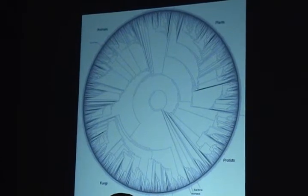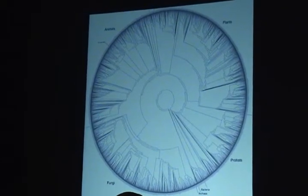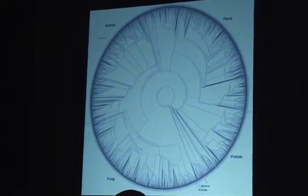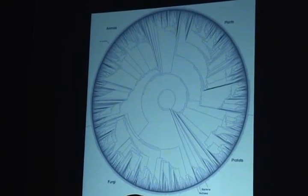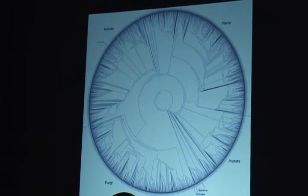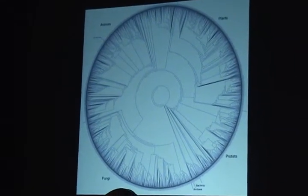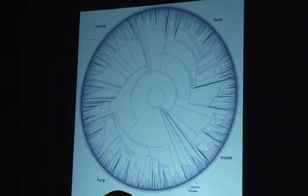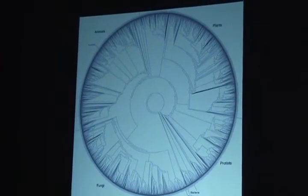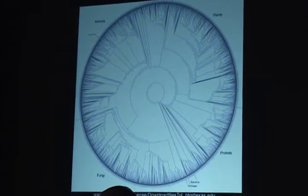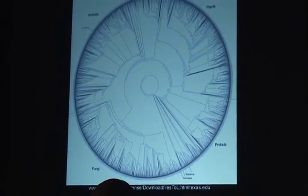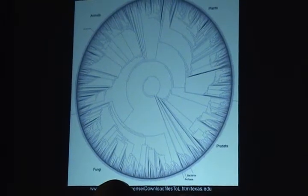We're not a closed system. We're getting energy from the sun — we have a source of energy, you can grow complexity. Today is the outer perimeter of this circle. Most of us, when we grew up, we had the animal kingdom and the plant kingdom. Those are represented in the upper left quadrant and the upper right. But fungi has revealed itself to us as a fundamental part of the tree of life in this circle of life.